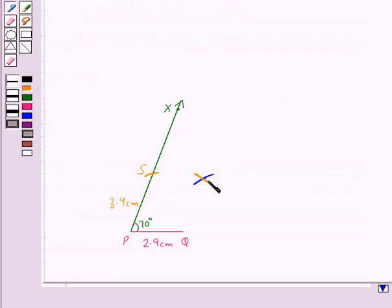So this arc is drawn with S as the center and radius 2.7 cm. It is intersecting the previous arc and we take this point of intersection of the two arcs as point R.